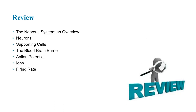In review, we covered the nervous system overview, nerves and neurons, supporting cells, the blood-brain barrier and how it affects treatment of neurological disorders, and action potentials with ions. We finished with firing rate, which we'll return to later. The next part covers more on neuron firing — thanks for watching.